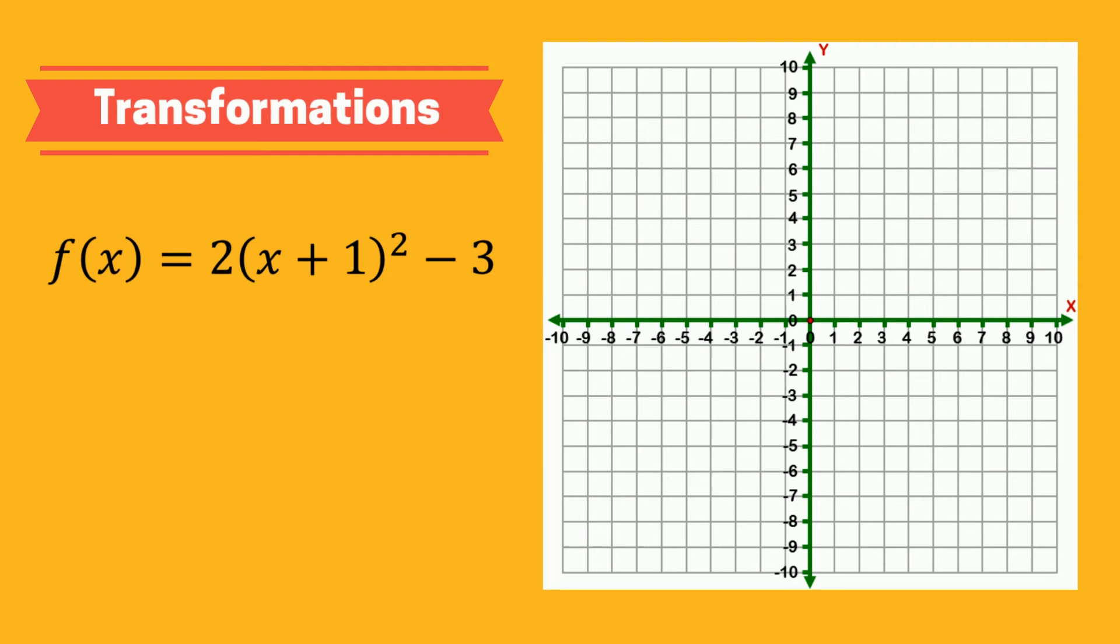The first way to interpret this is the usual way, with the parent function as y equals x squared. This would make the 2 and the minus 3 all outside transformations. And the plus 1 an inside transformation. Now, when graphing, we'd be sure to stretch by a factor of 2 and shift down 3. Since the plus 1 is on the inside or comes before the parent function, we'll work backwards to find the proper x values. Visually, we'll see that the graph shifts to the left by 1.